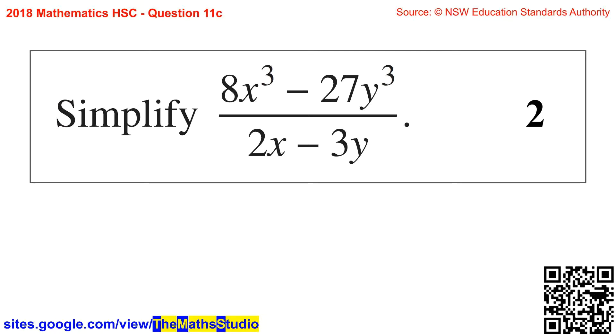Question 11c: Simplify 8x cubed minus 27y cubed over 2x minus 3y.